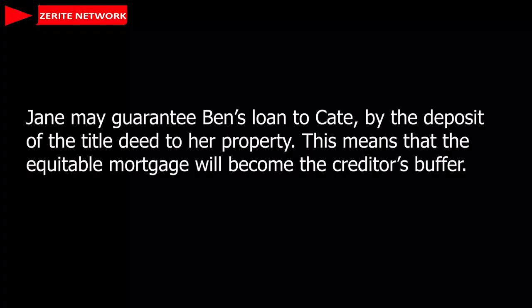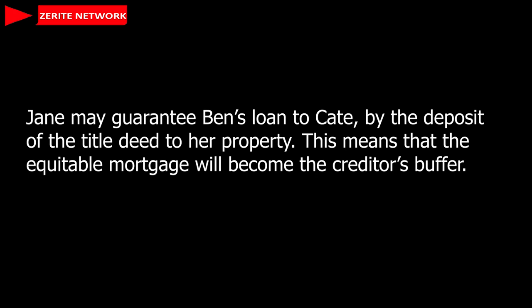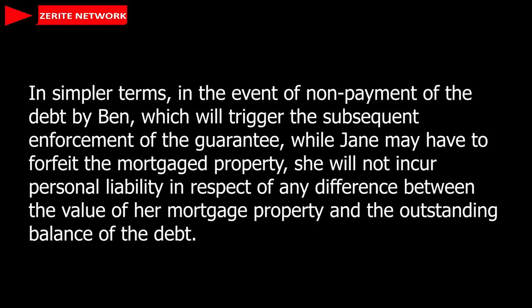Consider this example: Jane may guarantee Ben's loan by depositing the title deed to her property. This means that the equitable mortgage will become the creditor's buffer. In simpler terms, in the event of non-payment of the debt by Ben — which will trigger the subsequent enforcement of the guarantee — while Jane may have to forfeit the mortgaged property, she will not incur personal liability in respect of any difference between the value of the mortgaged property and the outstanding balance of the debt.